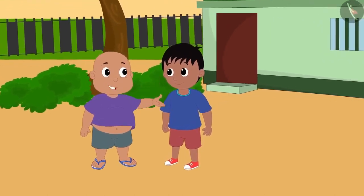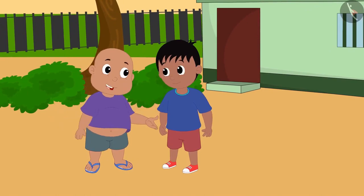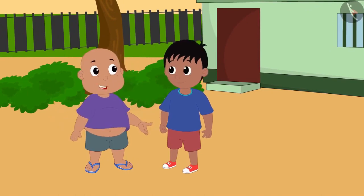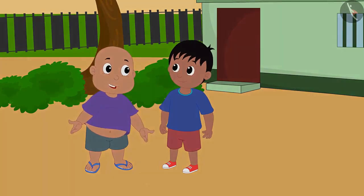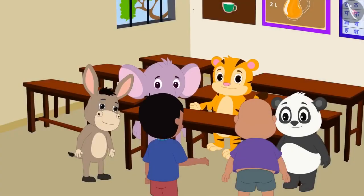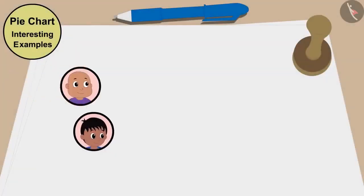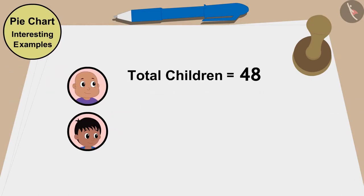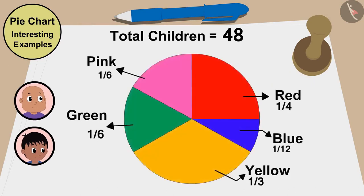Raju, Mrs. Khan has told me that all the children have to wear the same color shirt for the school setting. She has asked me to find out which color is most liked by the children. Come, I will help you. We will ask all the children to choose the color they like, then make a chart of this information to know which color is most liked. Raju and Bablu asked 48 children about their color choice and made a pie chart.